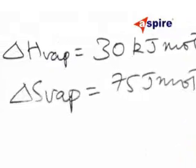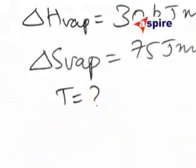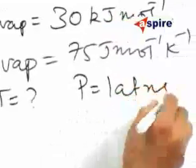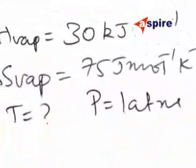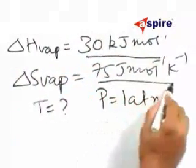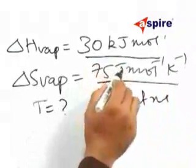You are asked to find out the temperature of the vapor at one atmosphere pressure for which this data holds good. If you look at the data carefully, 30 kilojoules per mole, 75 joules per mole per Kelvin, therefore you must convert this kilojoules into joules.